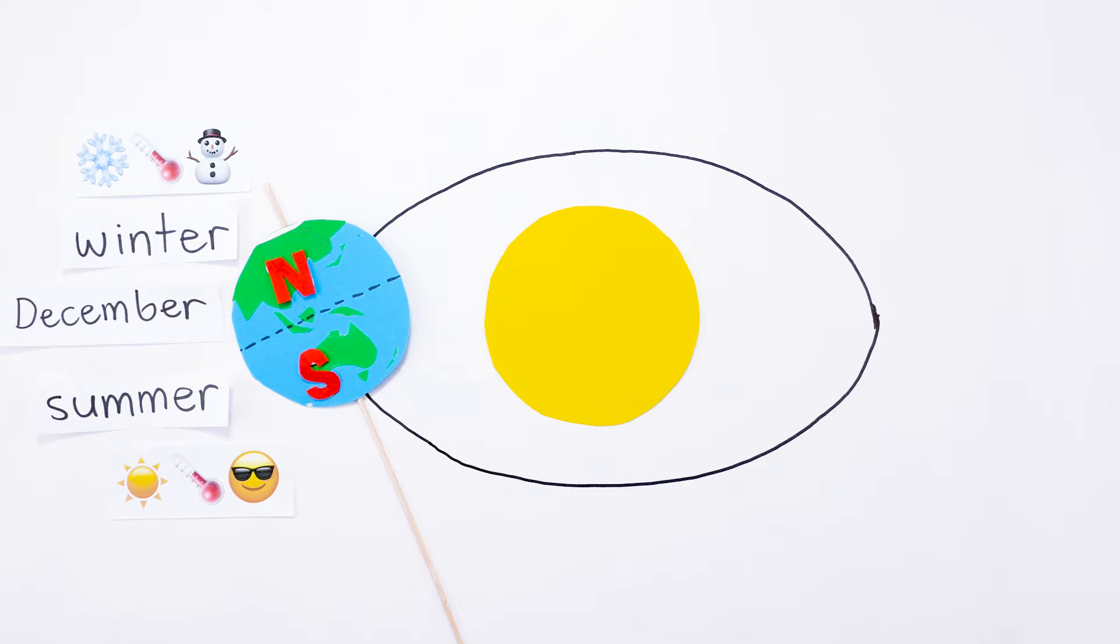It's colder in winter because the sunlight hitting that part of the Earth is more spread out and the days are shorter. The pole tilted away from the Sun is in constant darkness.